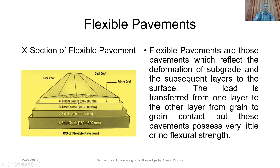After the binder course has been placed, a tack coat is done on the binder course, on which further a surface course of desired thickness is laid, followed by a seal coat. The thickness of the subgrade, sub-base, base course, binder course, and surface course is decided based on the California Bearing Ratio (CBR) test done on the soil upon which the pavement is built.